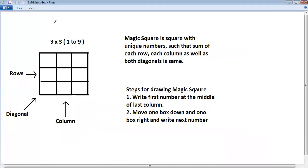Magic square is square with unique numbers such that sum of each row, each column as well as both diagonals is same. Here we are drawn 3 by 3 magic square. There are 3 rows, horizontal ones are rows, 3 columns and 2 diagonals. The first diagonal and the second diagonal.